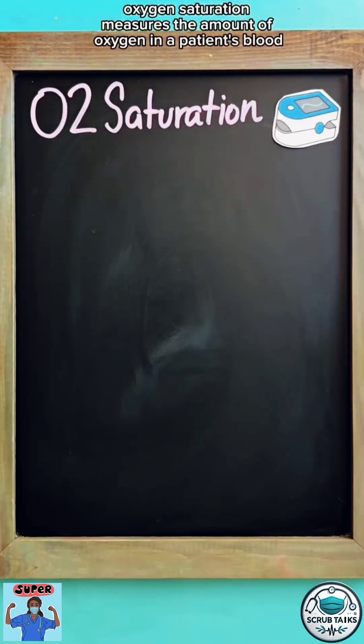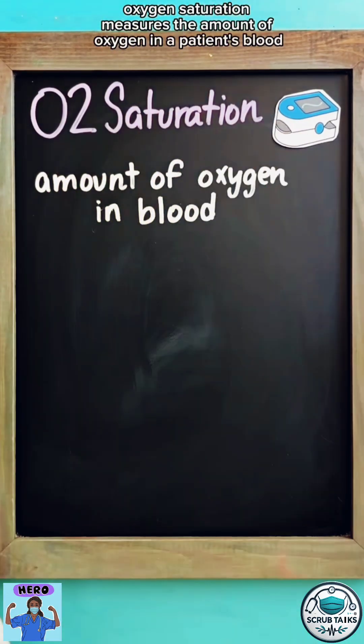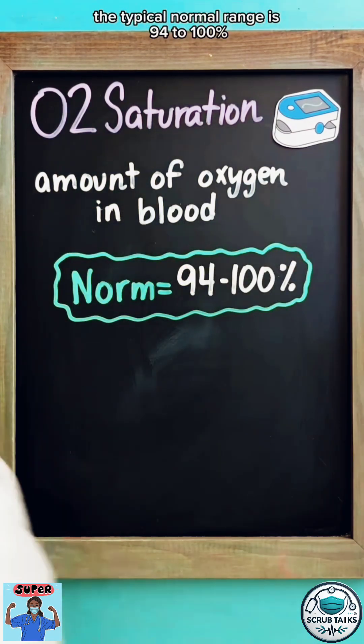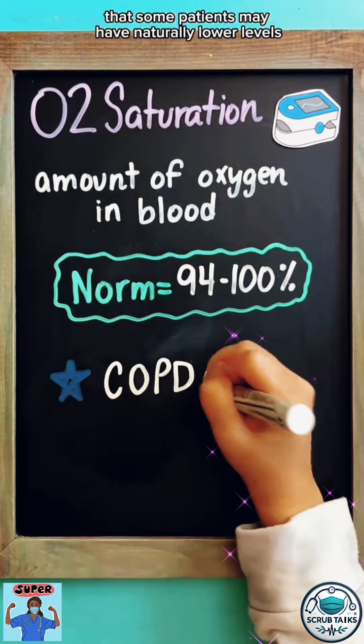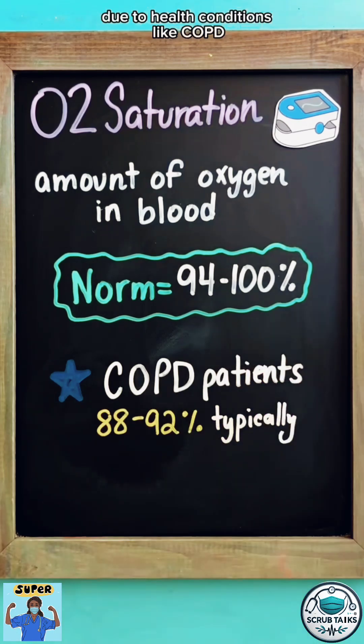Oxygen saturation measures the amount of oxygen in a patient's blood. The typical normal range is 94 to 100 percent, but important to keep in mind that some patients may have naturally lower levels due to health conditions like COPD.